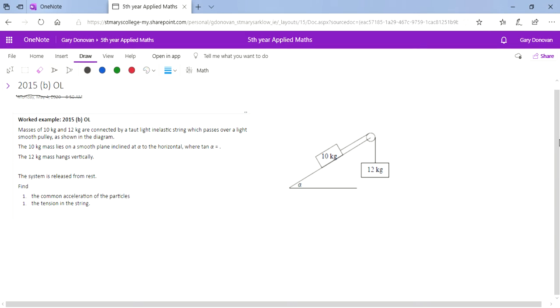We have a mass of 10 kg and 12 kg connected by a taut light inelastic string which passes over a light smooth pulley as shown in the diagram. The 10 kg mass lies on a smooth plane. When it tells you it lies on a smooth plane, that's important - that means there's no friction.